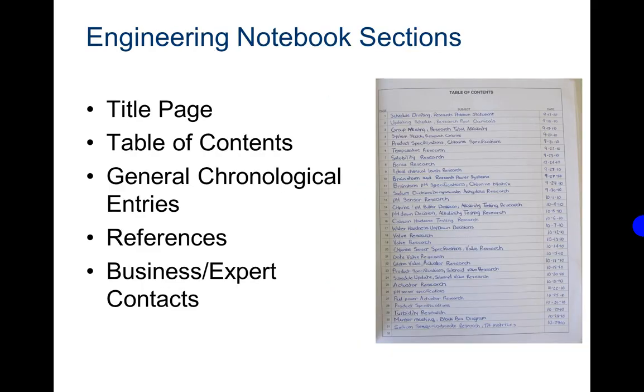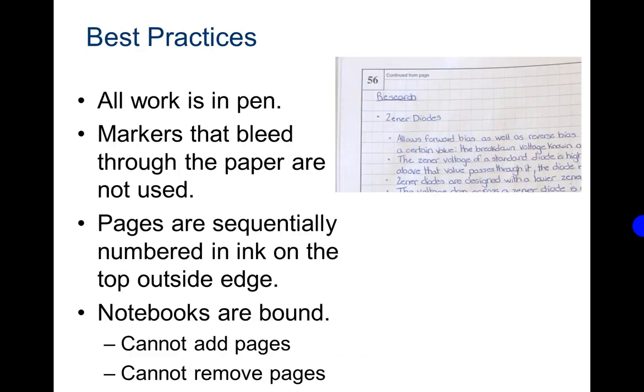The engineering notebook sections: your title page, table of contents, general chronological entries, references, business expert contacts. All work is in pen and that is blue or black ink pens, not your pink, your purple, your green. Has to be blue or black ink. Markers that bleed through the paper are not used.